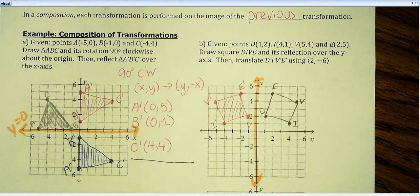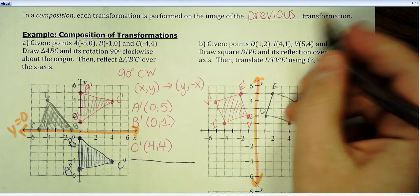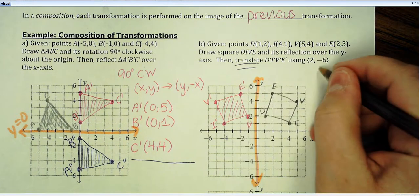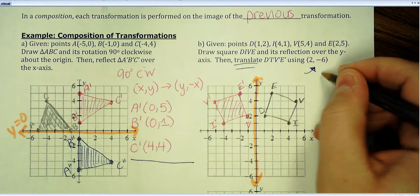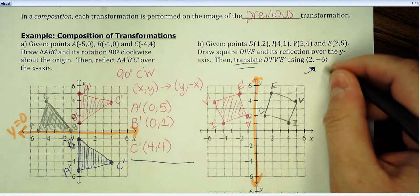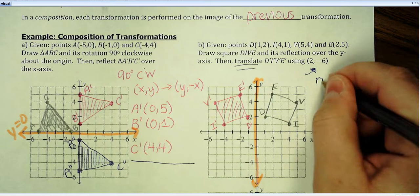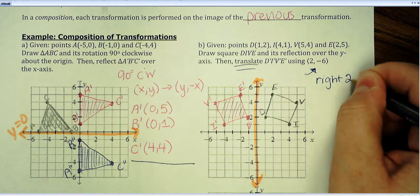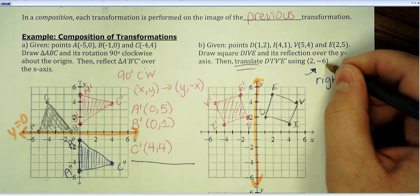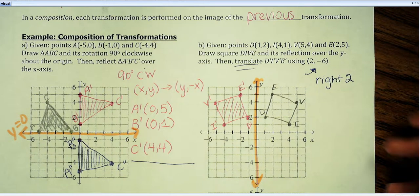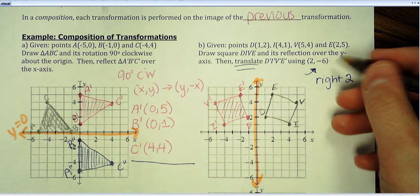Now, the next transformation we're going to perform is a translation. So, they're going to give you a vector description. The first number is going to tell you left or right. If it's positive, you're going to go to the right. So, this is right, two. And the second number is how you move up or down. If it's positive, you go up. Here, it's negative. So, we're going to go down, six.